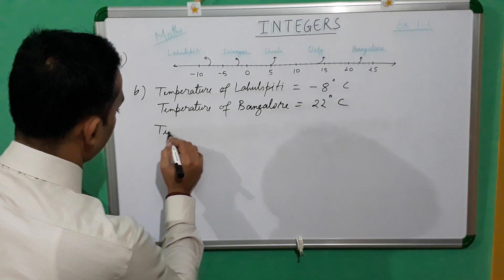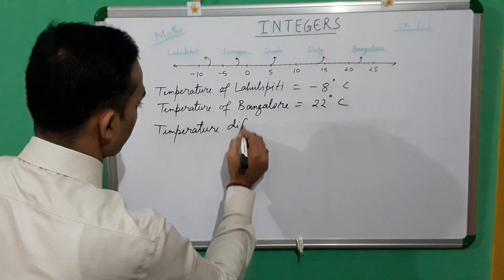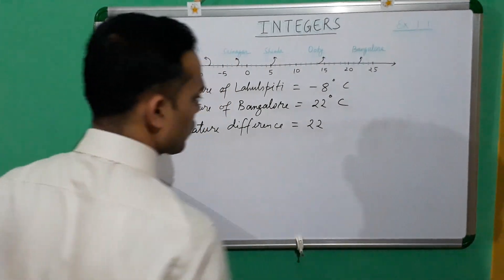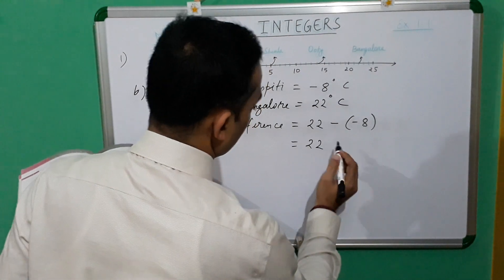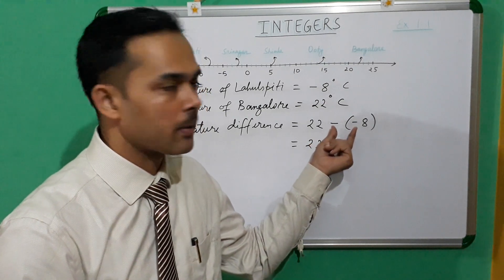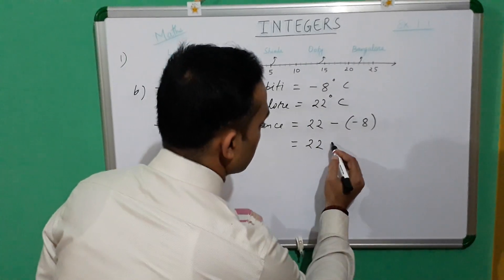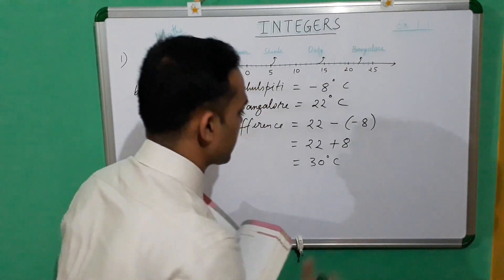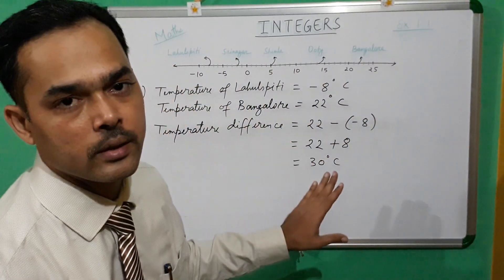Now let us find the temperature difference. Since 22 is greater, we take 22 first, then minus minus 8. As I said in my previous video, whenever you multiply the same signs it is always positive, so minus into minus becomes plus. This gives us plus 8, and thus 22 plus 8 is 30 degrees Celsius. It means the temperature difference of Bangalore and Laul Spiti is 30 degrees Celsius.